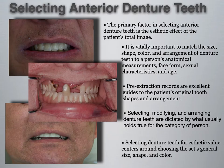Now that we've gone through the characteristics and different types of denture teeth, let's talk about selecting anterior denture teeth. The primary factor is the aesthetic effect of the patient's total image. It is vitally important to match the size, shape, color, and arrangement of denture teeth to a person's anatomical measurements, face form, sexual characteristics, and age.